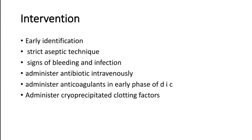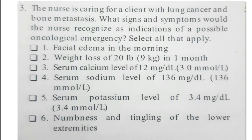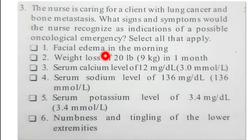Practice question: the nurse is caring for a client with lung cancer and bone metastasis. What signs and symptoms would the nurse recognize as indication of a possible oncological emergency — select all that apply. The options are: facial edema, weight loss of 9 kg in a month, serum calcium level of 12 mg/dL, serum sodium level of 136 mEq/L, serum potassium level of 3.4 mEq/L, and numbness and tingling of the lower extremity.